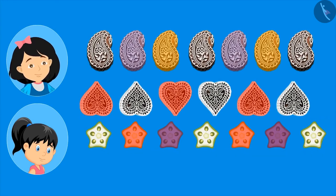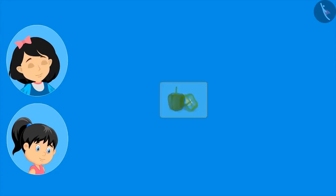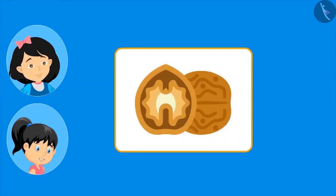Misty: I have never thought about this! Sister: now think and tell me — can we use any other food item or vegetable for block printing? Misty: capsicum, walnut! Sister: very good! Kids, you can pause the video and think about more such types of objects.